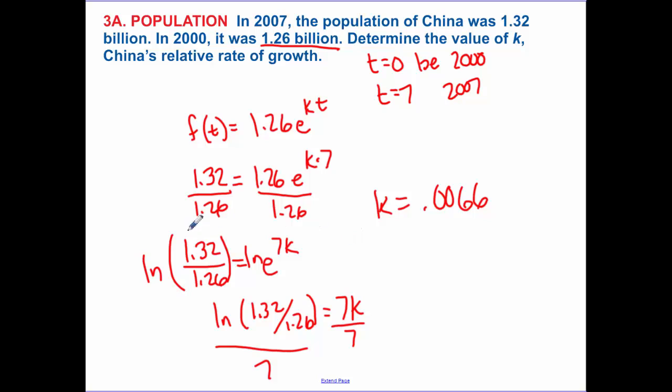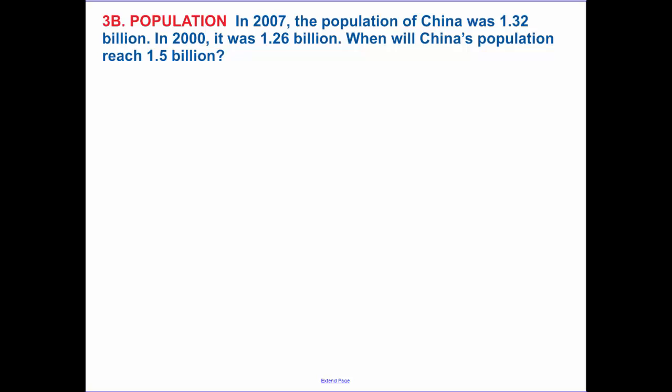And k, that's our rate of growth. So now this is building on what we had. In 2007 the population was 1.32. In 2000 it was 1.26, so it's starting with what we had. So we're going to be utilizing this equation.